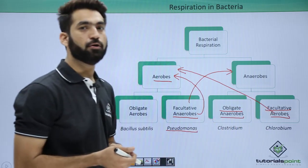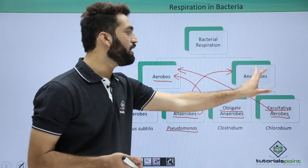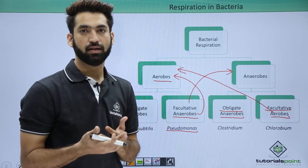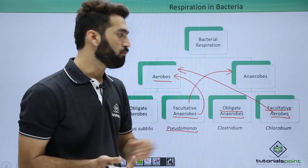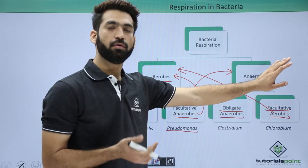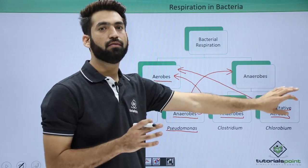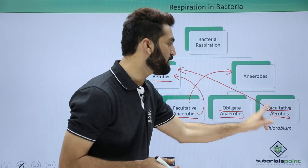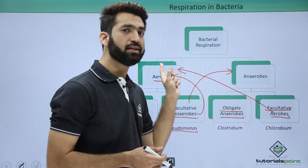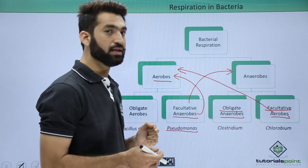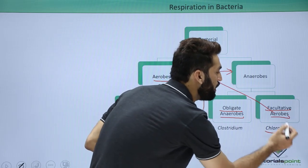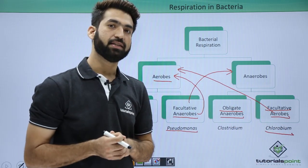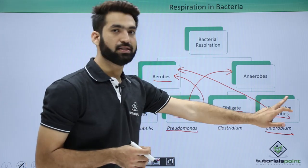Facultative aerobes respire in an anaerobic environment, but when oxygen becomes available, they won't die — they can also live in oxygenated conditions. They are called facultative aerobes because they can use the faculties of an aerobic environment. Chlorobium is one example of a facultative aerobe. Importantly, most photosynthetic bacteria are actually facultative aerobes.